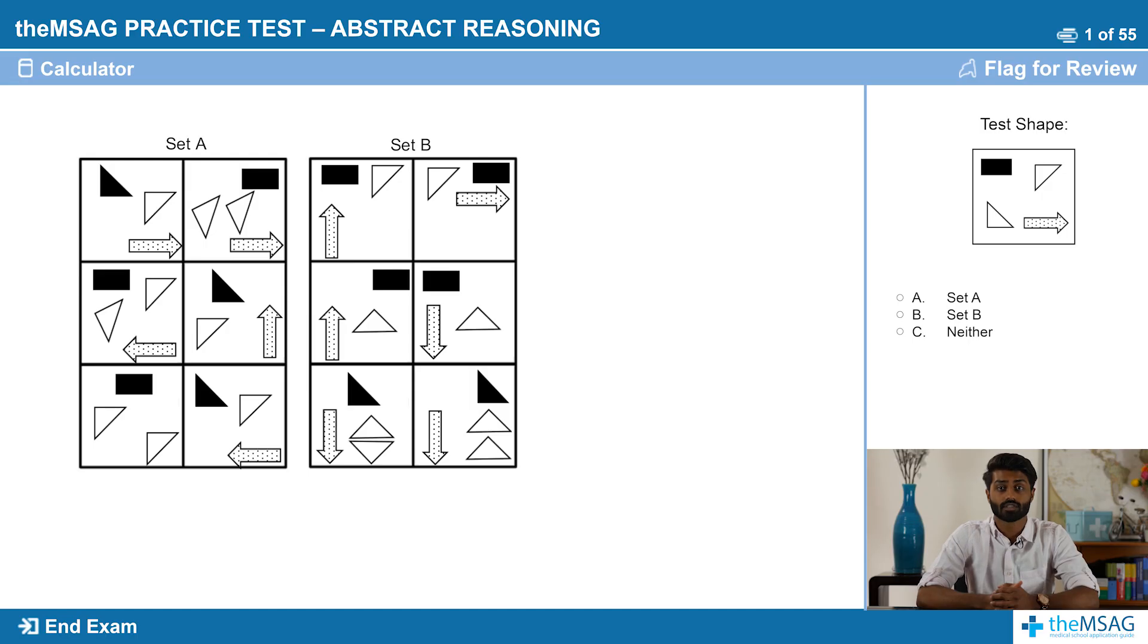Did you think there was a relation with the arrows? Oh, I'm sorry. The arrows were a distraction, a technique often used by those who set the UKCAT questions. Remember to think about the simplest box within the set to try and see if your theory holds true. The box in the bottom left of set A had no arrow in it. Therefore, a pattern related to the arrow was unlikely to exist.